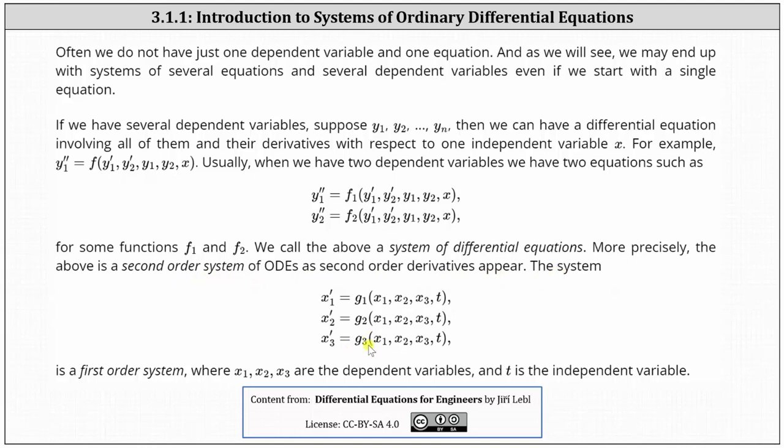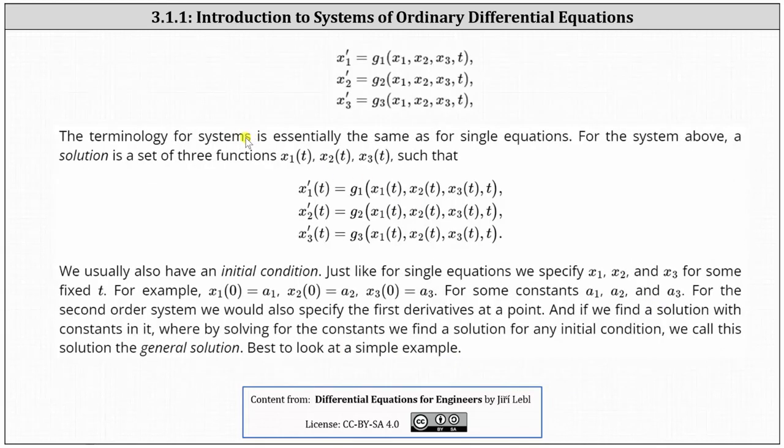The system shown below is a first-order system where x1, x2, and x3 are the dependent variables and t is the independent variable. The terminology for systems is essentially the same as for single equations. For the system above, a solution is a set of three functions, x1 of t, x2 of t, x3 of t, such that the three functions satisfy the three differential equations.